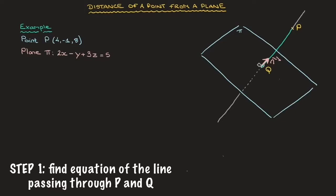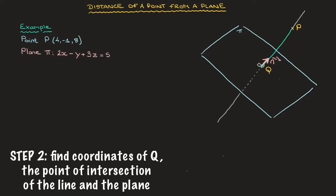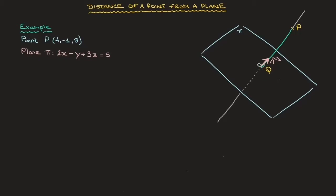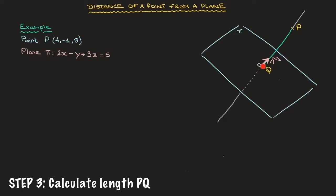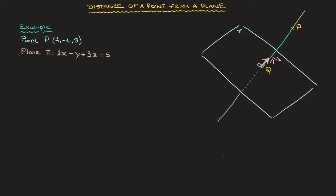To find the length PQ, we need to find the coordinates of point Q on the plane. To find Q, the approach is to find the coordinates of the point of intersection of the line passing through P and Q. The whole approach can be summarized in three steps: Step 1 — find the equation of the line passing through points P and Q.